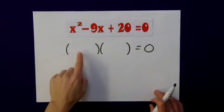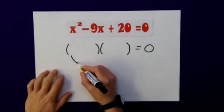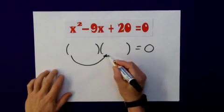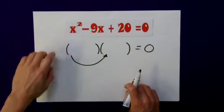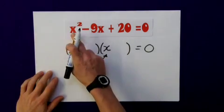Now remember when I multiply these brackets back out I will get this back. So the first thing I want to consider is the term that will go there multiplied by the term here will have to give me x squared. Now that's an easy one. x times x will give me x squared.